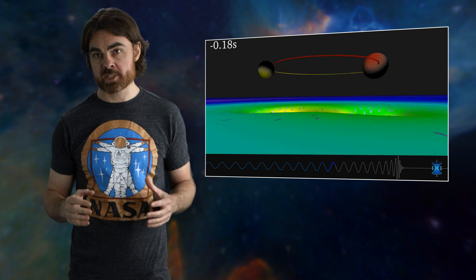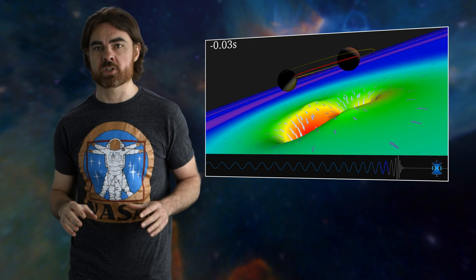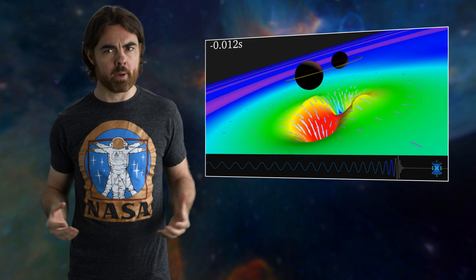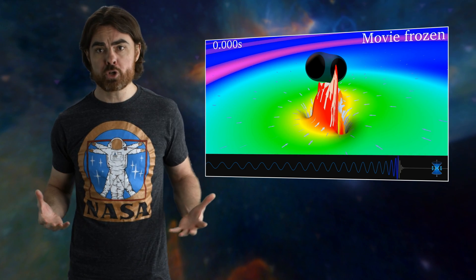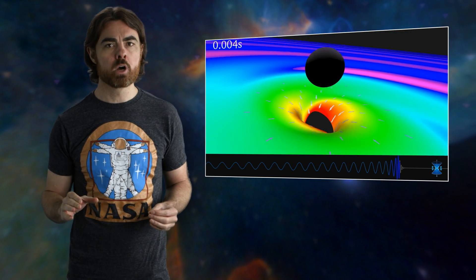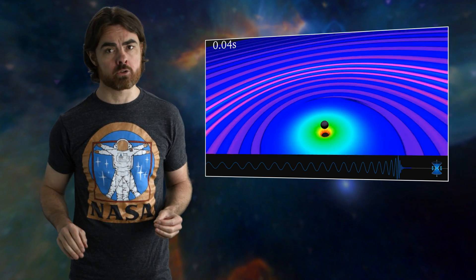We also now know that our estimates of the number of binary black holes in the universe and their masses are at least in the right ballpark. This is good because it means we're going to see a lot more black hole mergers. As we do so, we'll start to nail down the astrophysics of black hole formation and growth.